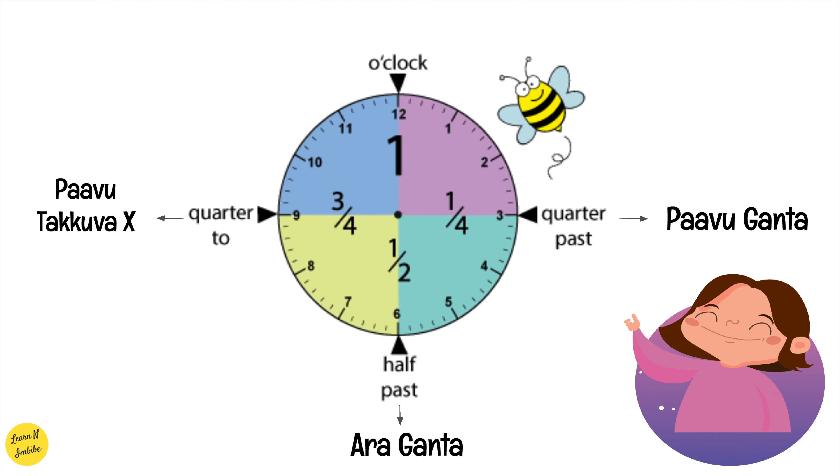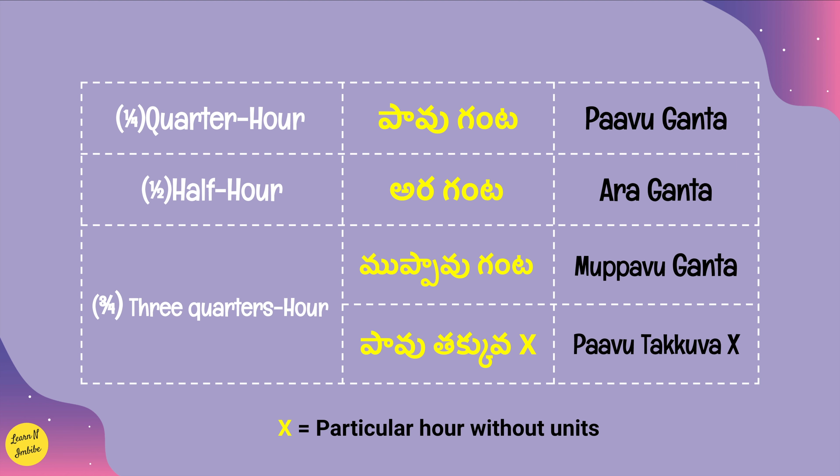This indicates the quarter portions of a whole clock. One quarter means quarter hour, that is Paav ganta. One half, that is half an hour, is called Ara ganta. Three quarters of an hour can be called either Muppau ganta, or Paavu Takkua followed by that particular hour — where 'Takkua' means 'less' in Telugu.